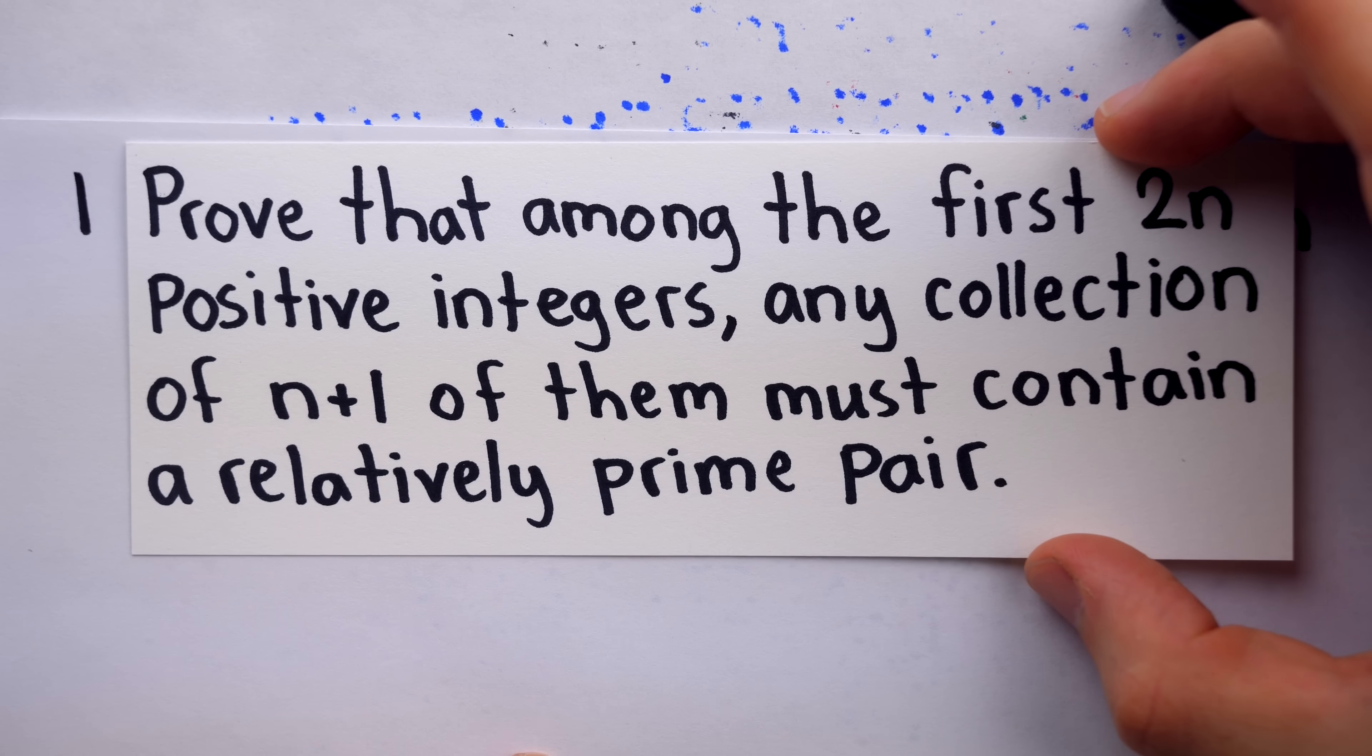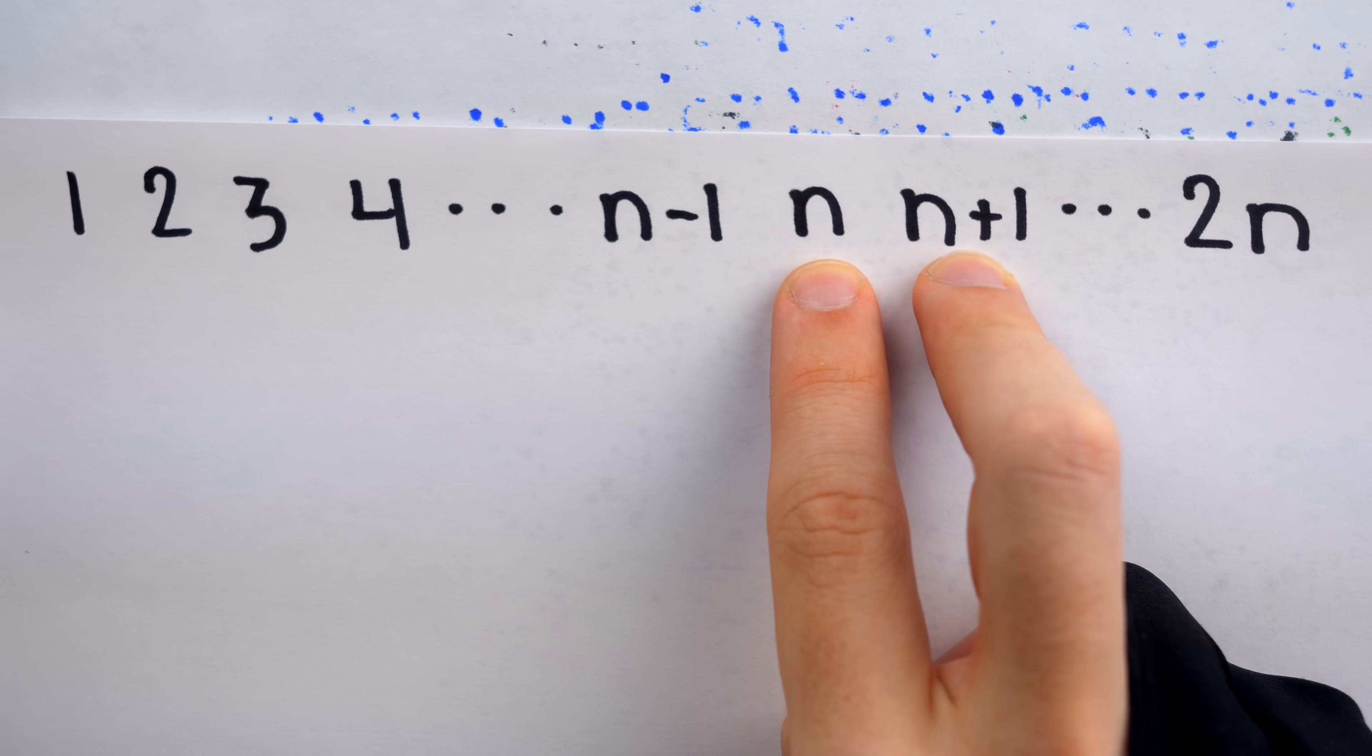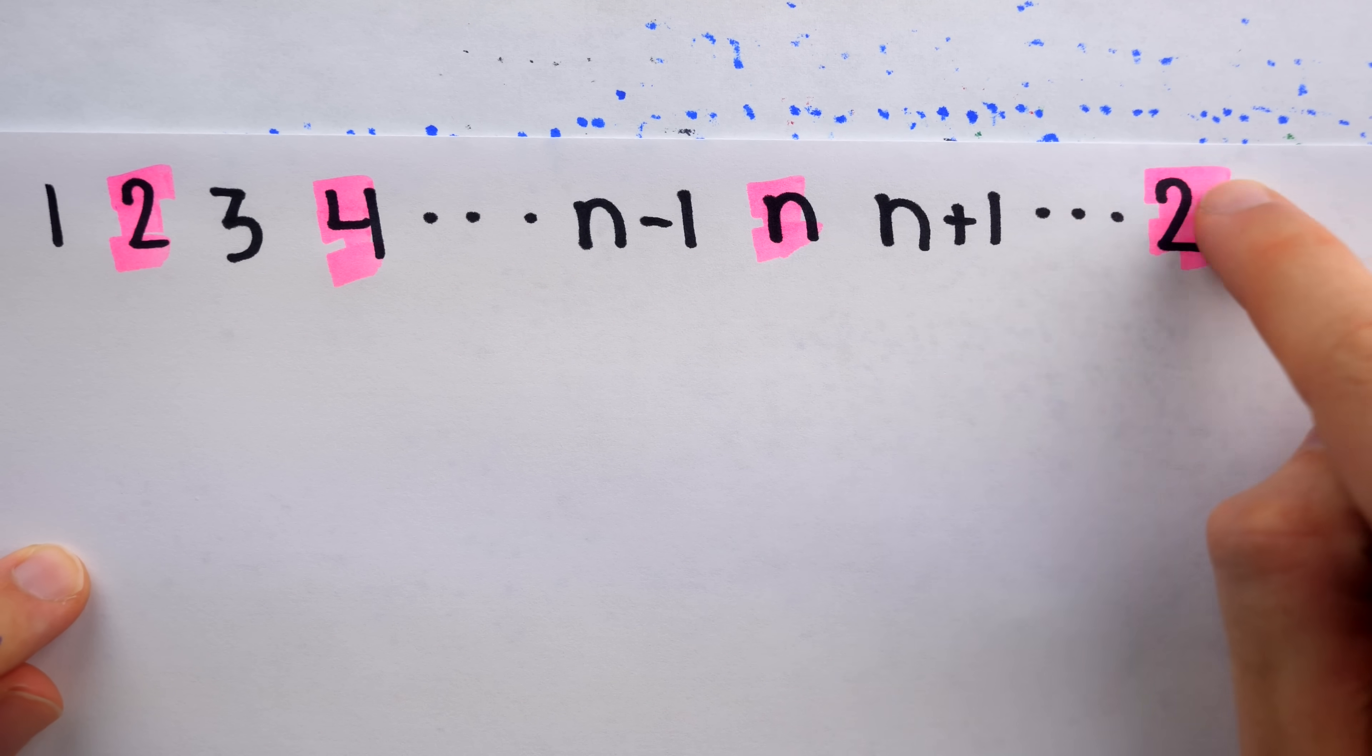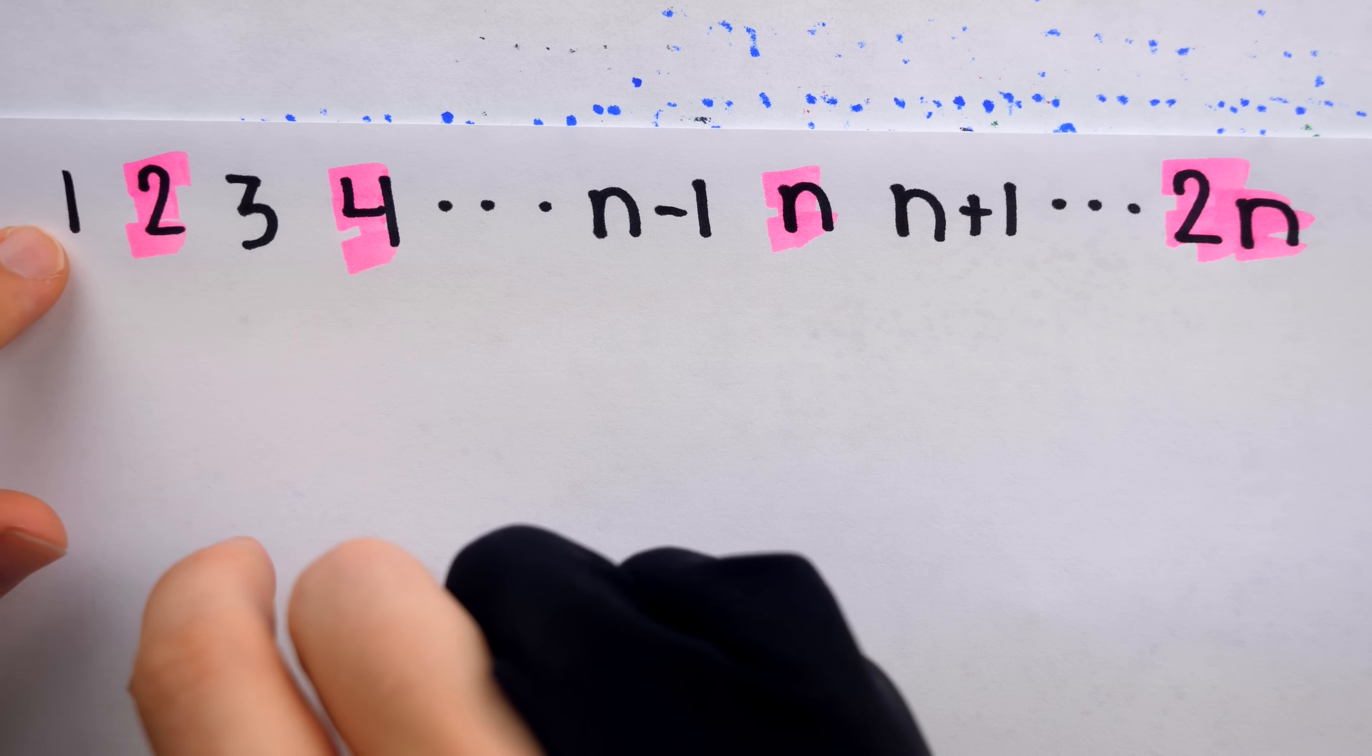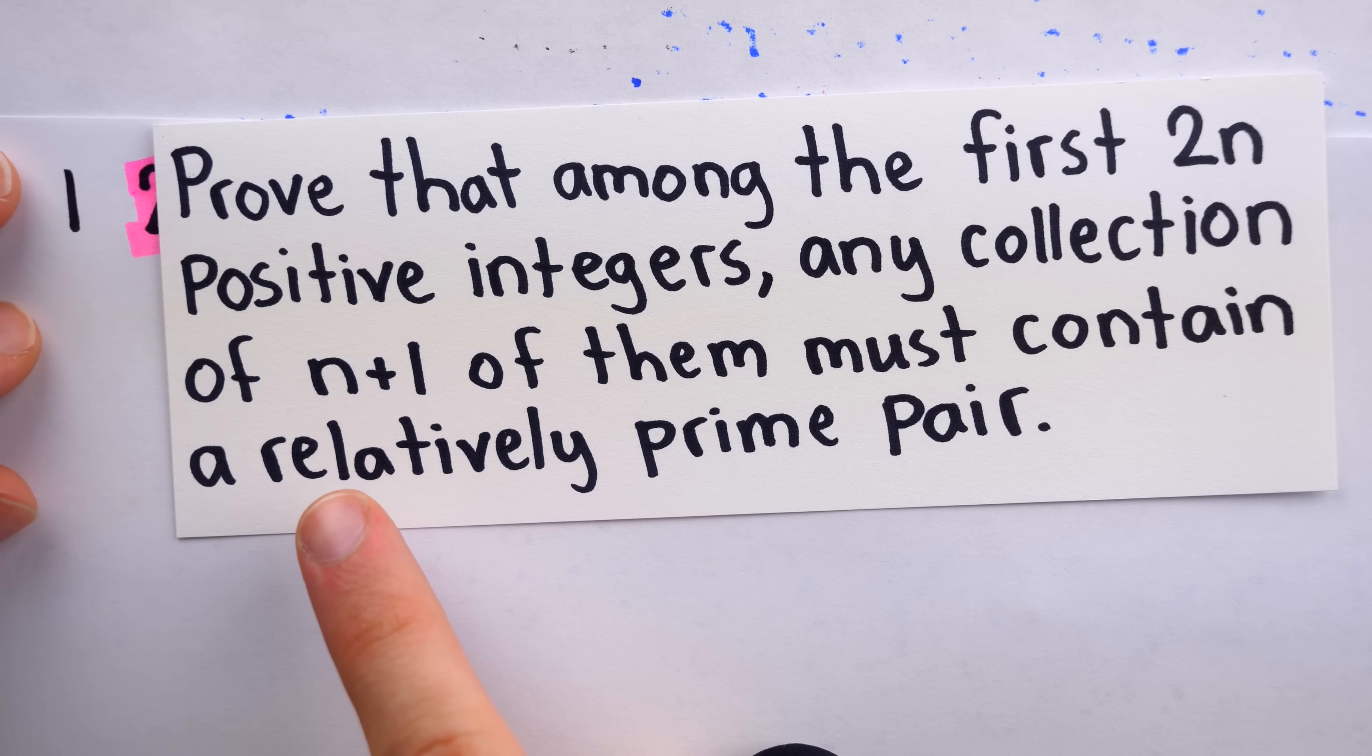The key in our problem is that if we select n+1 numbers among the first 2n positive integers, then we must select at least one pair of consecutive numbers. If we try to avoid selecting neighbors or consecutive numbers by selecting every other number, then we can only get half of the total, which is n numbers. And we need to pick n+1 of them. Thus, it's not possible for us to select every other number, since we have to pick n+1 of them, not just n of them. So we're forced to pick at least one pair of neighbors, which will be relatively prime as desired.